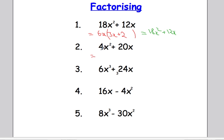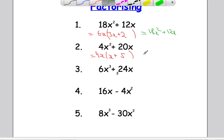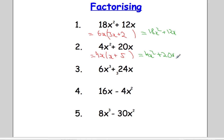Example 2: the highest common factor of 4x squared and 20x. Let's look at the numbers first — 4 and 20. The biggest thing I can divide into both is 4. Let's look at the letters: we've got x squared and x, so I can also factor out x. So we factor out 4x. What will I multiply 4x by to get 4x squared? 4x times x gives me 4x squared. And to get 20x, I'll do 4x multiplied by 5. Check your answer: 4x times x gives 4x squared, 4x times 5 gives 20x. Fantastic.